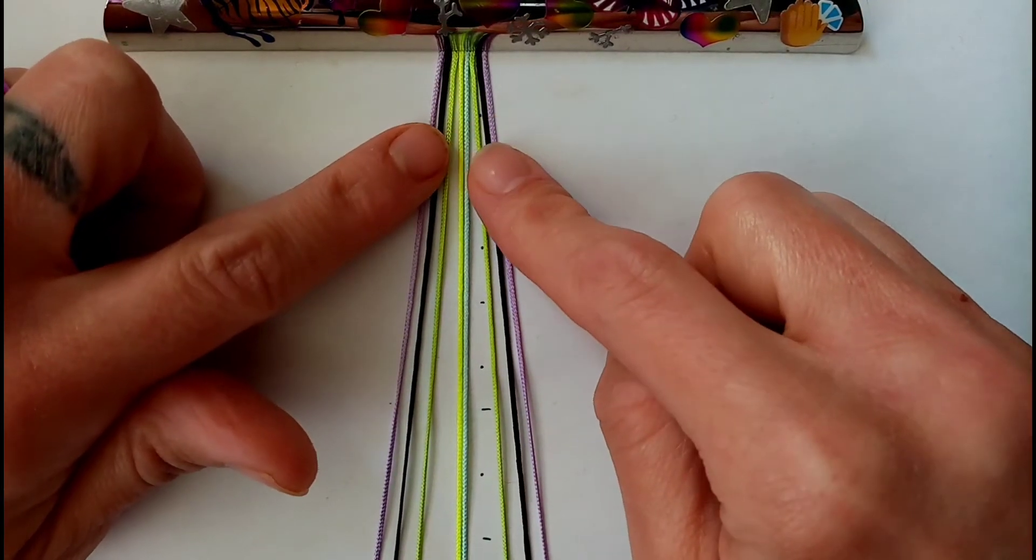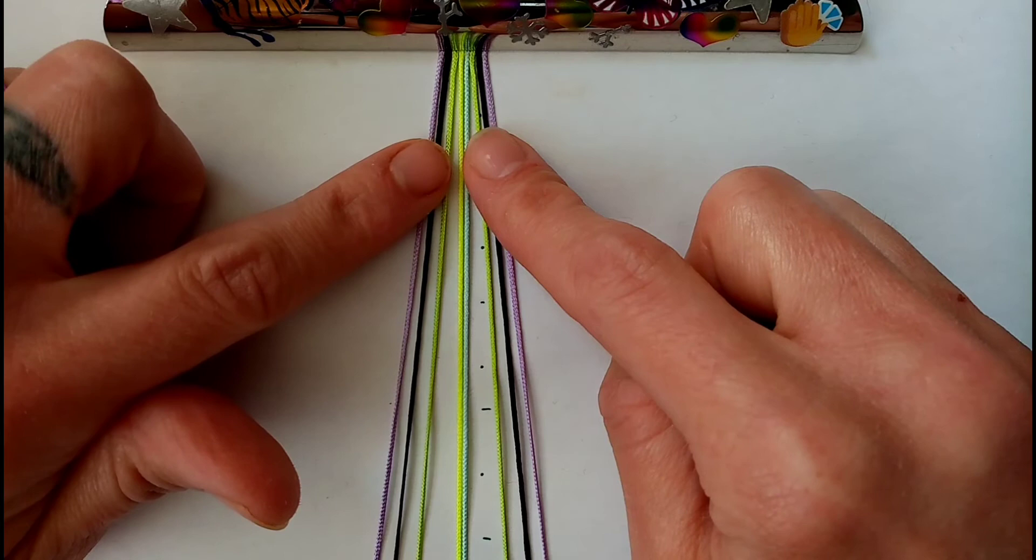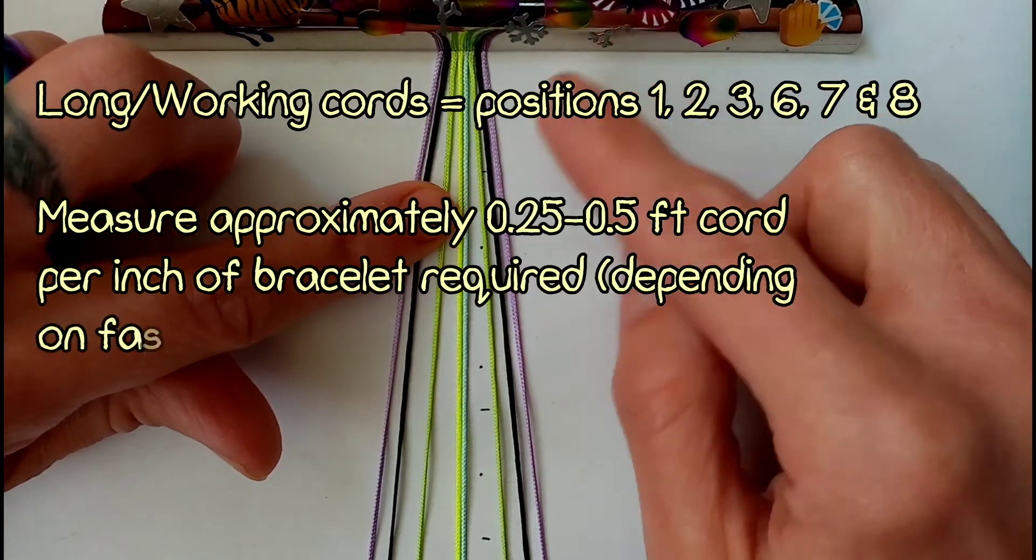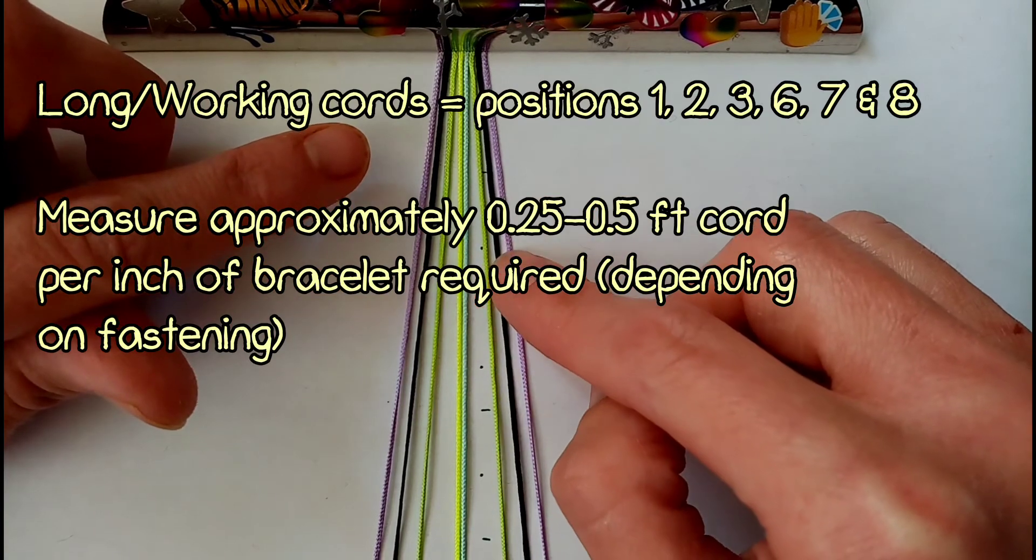To get started you want to arrange your cords in order. This bracelet has six long cords and these should be in positions 1, 2, 3, 6, 7, and 8.